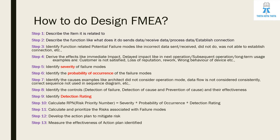Step eight is to identify the controls: detection of failure, detection of cause, prevention of cause, and their effectiveness. Step nine is to identify the detection rating. Step ten is to calculate RPN — severity multiplied by probability of occurrence multiplied by detection rating. Step eleven is to calculate and prioritize risks based on the RPN number to determine if mitigation is needed. Step twelve is to develop the action plan to mitigate risk. Step thirteen is to measure the effectiveness of the action plan identified.